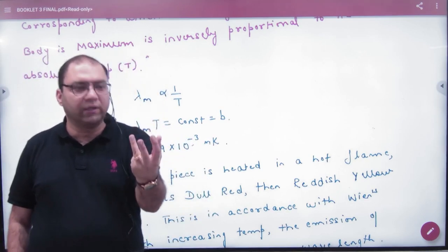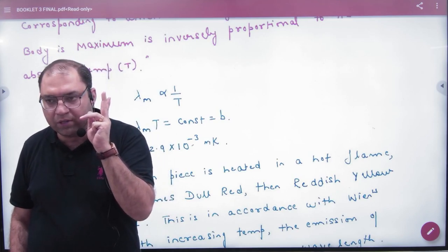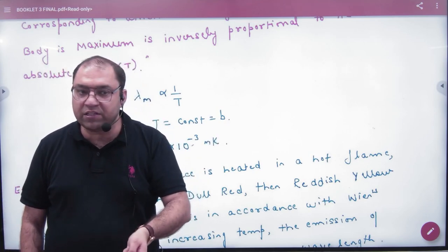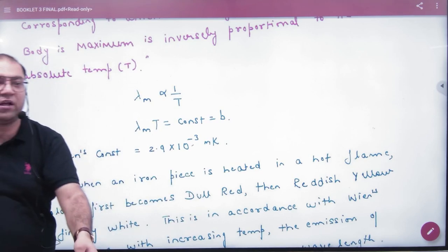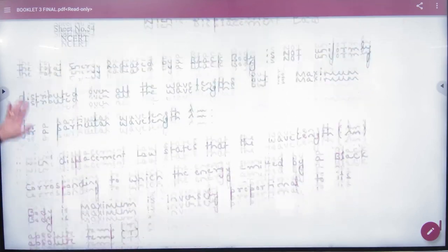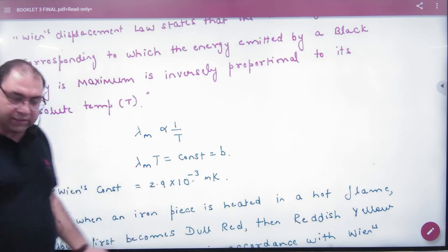Stefan had said: give me the energy E emitted per second per unit area, and I can give you the temperature — E = σT⁴. Wien said: give me the wavelength lambda m at which the energy is maximum, and I can give you the temperature. Wien's Displacement Law states that lambda m — the wavelength corresponding to maximum energy emitted — is inversely proportional to the absolute temperature.